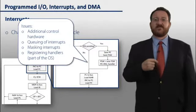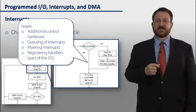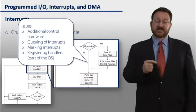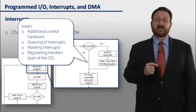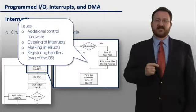The issues here is that we're going to have additional control hardware, naturally, because we're modifying the fetch and execute cycle. We'll also have to be able to queue up interrupts, because while we're processing one interrupt, we could get interrupted by another IO device. And so we don't want to lose those interrupts. We want to save them in a line.